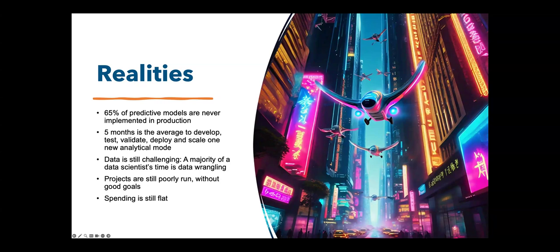Data is still challenging. A majority of data scientists' time is still spent on data wrangling. Our data out there — it's not holistic, accurate, timely, accessible, governed, protected, and democratized. All these things that data needs to be to get to AI. There's a certain maturity level that the data has to be at in order for you to do great things with AI, and for a lot of us, that's the impediment.